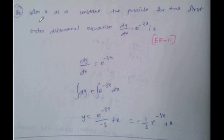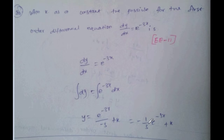Problem 20: With K as a constant, the solution for the first order differential equation dy/dx = e^(-3x) (GATE 2011). Integrating both sides: y = e^(-3x)/(-3) + K = -1/3 · e^(-3x) + K.